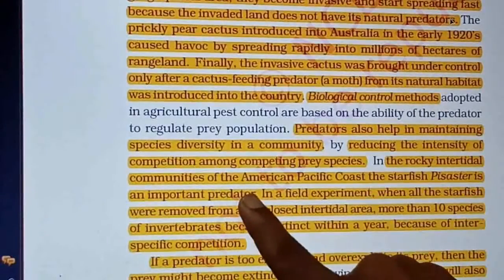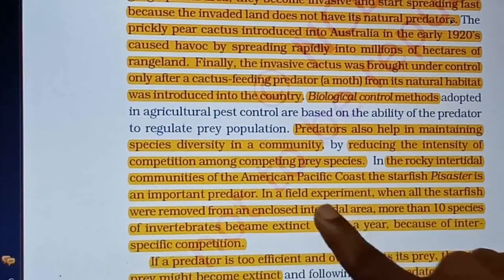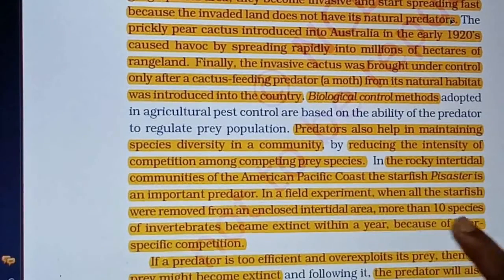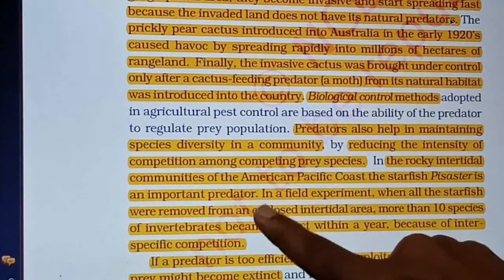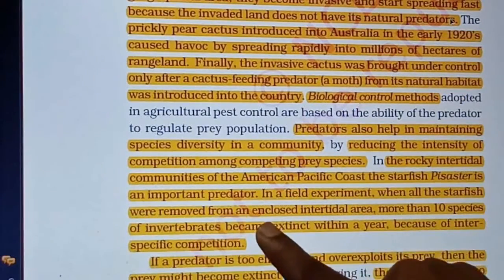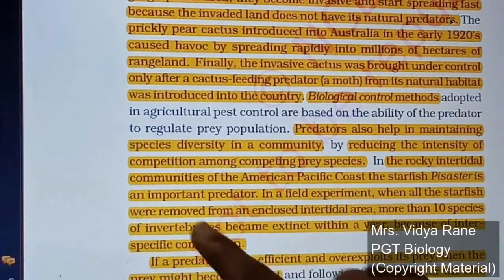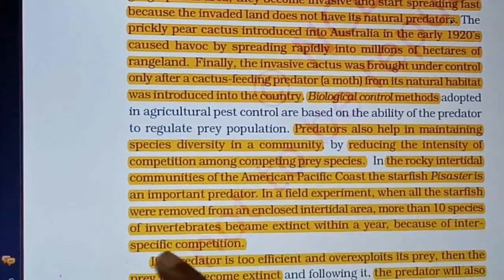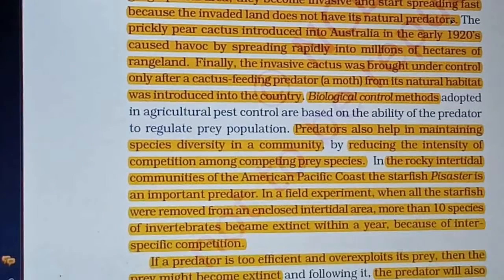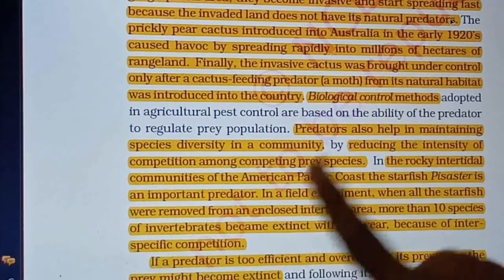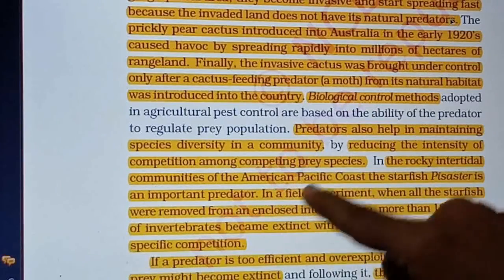On the American Pacific coast, the starfish Pisaster is a very important predator. In an experiment, when all starfish were removed from a particular intertidal area, more than 10 species of invertebrates went extinct within one year. Though the prey were free of predation, they grew enormously, causing intense interspecific competition, which led to their extinction. This shows how predators maintain prey population balance.